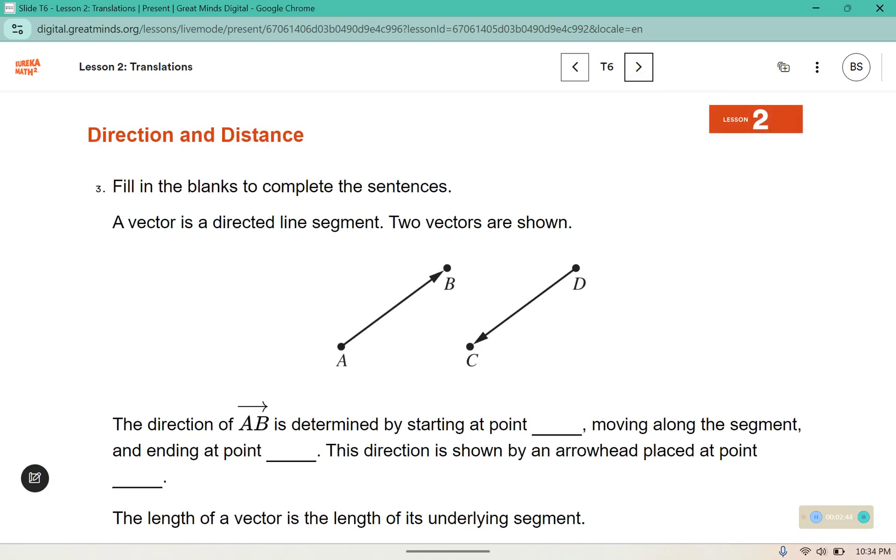All right, and number three, fill in the blanks to complete these sentences. A vector, these are vectors, a vector is a directed line segment. Two vectors are shown.